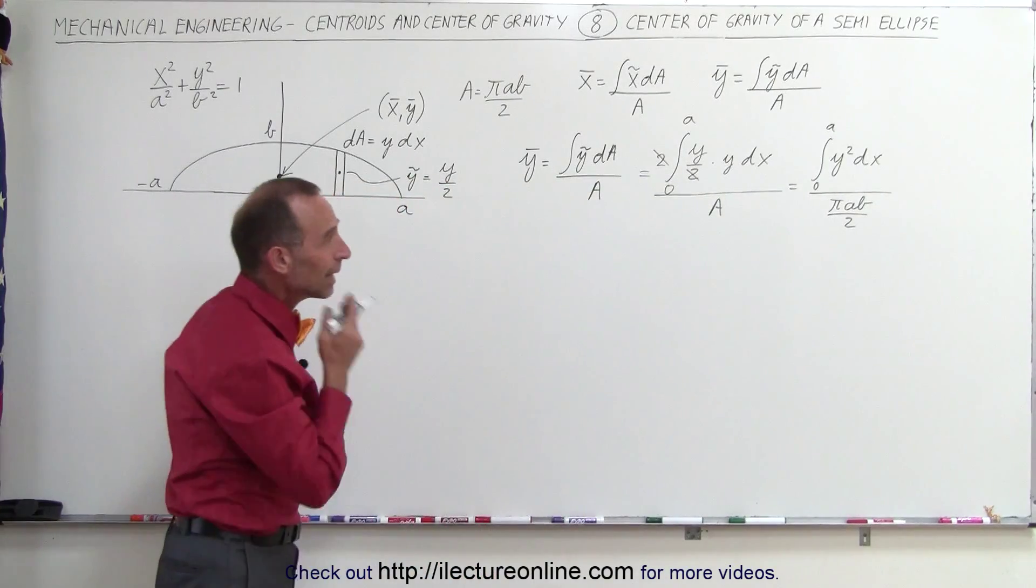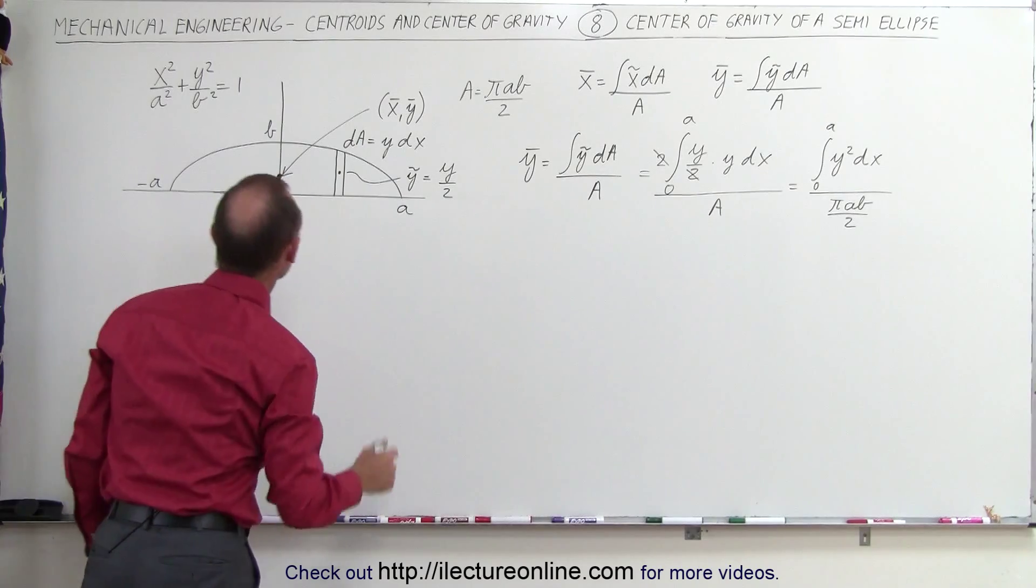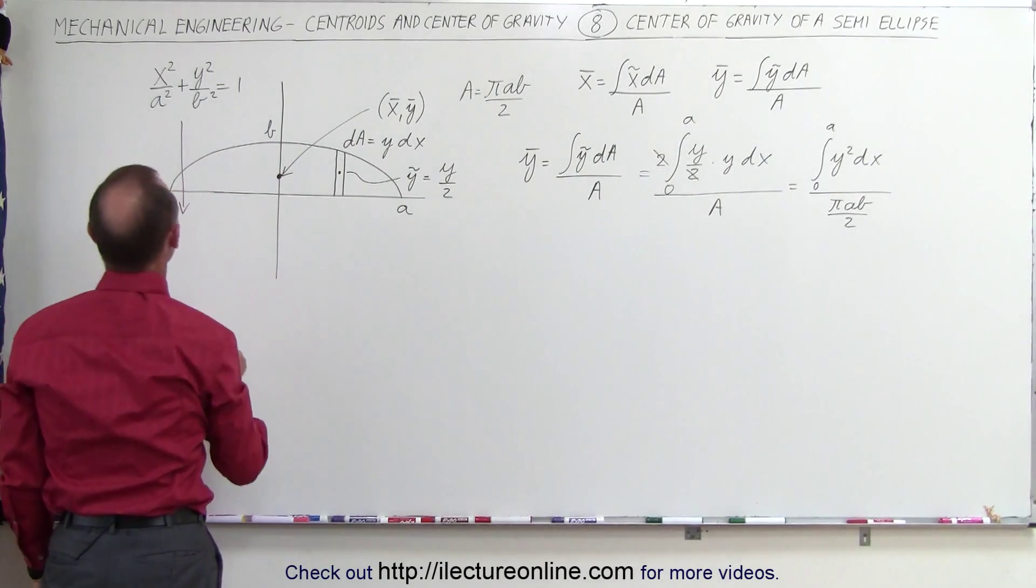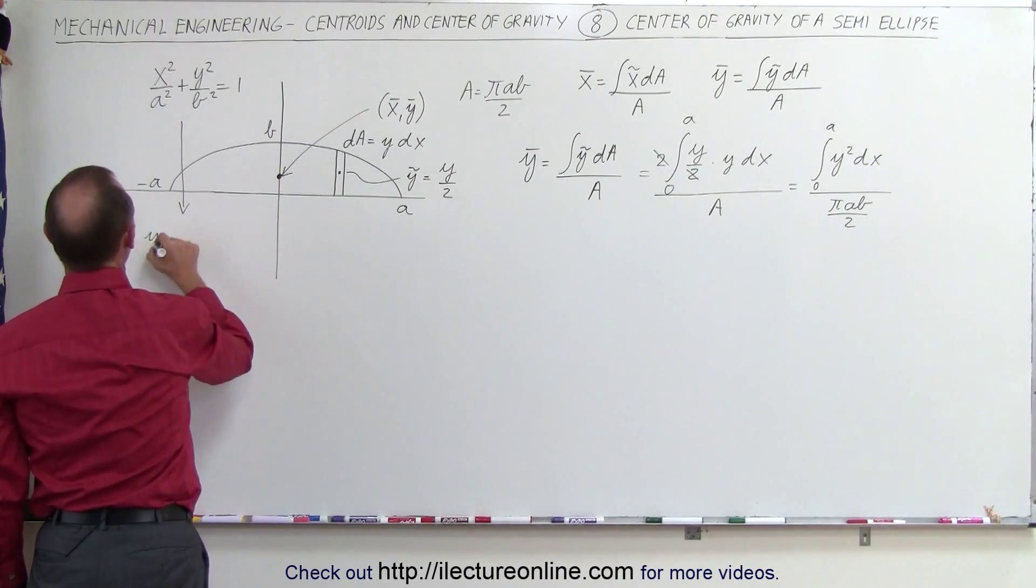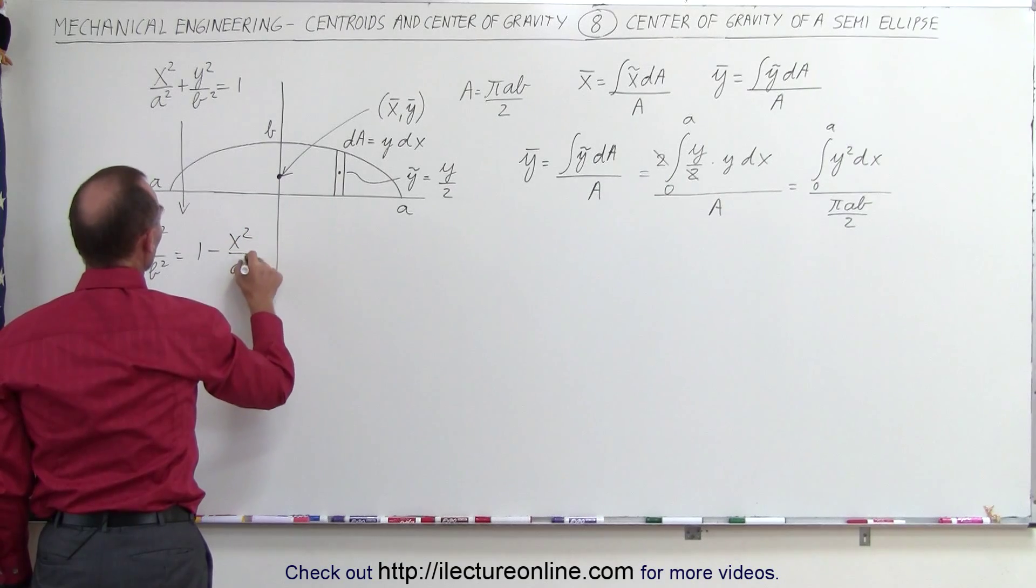We're not quite ready to integrate yet because we have a y² and the dx in the integral. So we have to solve for y² in terms of x². So we have y² divided by b² is equal to 1 minus x² over a².